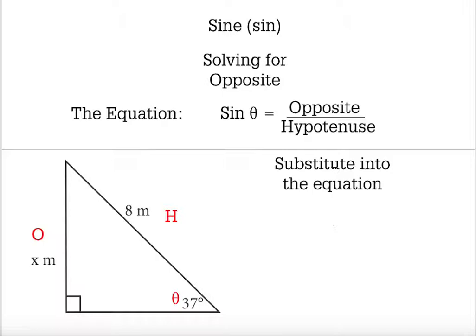So let's substitute what we know into the equation so we can solve for x. Sine 37 equals x over 8.